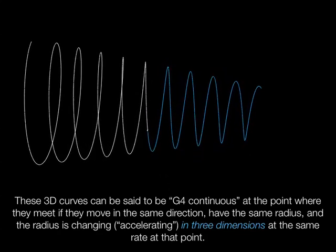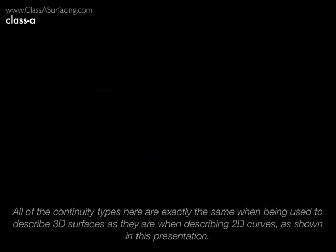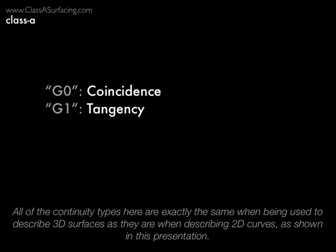In review, we have G0 coincidence. We have G1, which means they touch and they go the same direction, or they're tangent. G2: they touch, they go the same direction, and their radii are equal at the contact point — called curvature continuity.